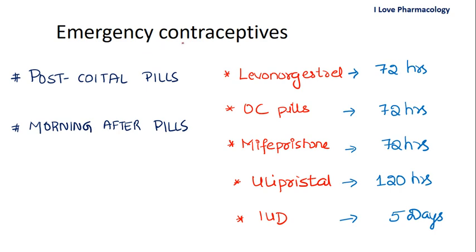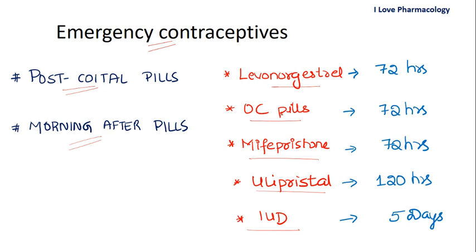The next type is emergency contraceptives, also called post-coital or morning-after pills. Examples include levonorgestrel, combined oral contraceptive pills, mifepristone, ulipristal, and intrauterine devices. These are used after unprotected sexual intercourse, which most commonly occurs during rape or failure of condoms.